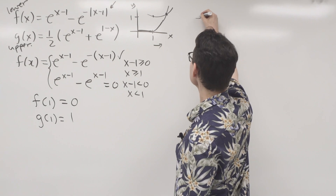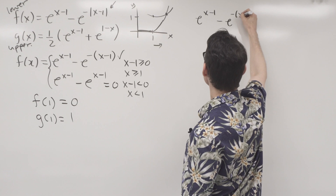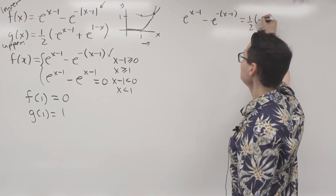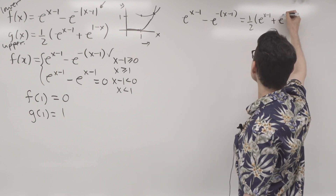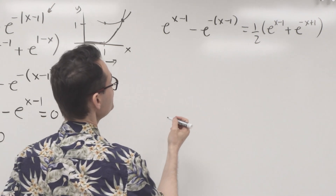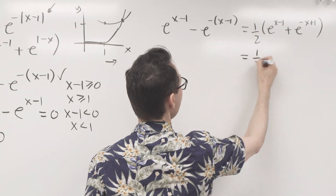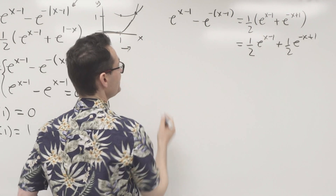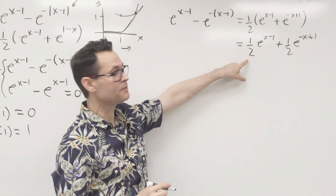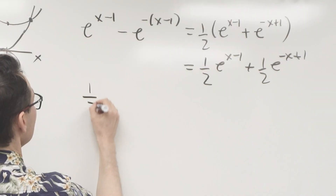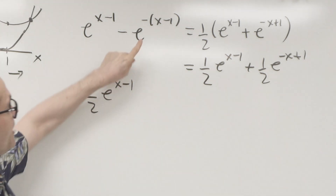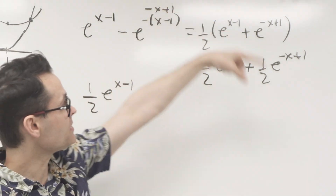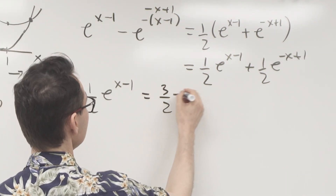So: e^(x−1) minus e^(−(x−1)) equals (1/2)[e^(x−1) plus e^(−x+1)]. I can group these like terms. There's a half on one side and 1 on the other, giving a half on the left-hand side. And bringing the negative x+1 term over, it's equivalent to (3/2)e^(−x+1). The twos cancel, so I can simplify.